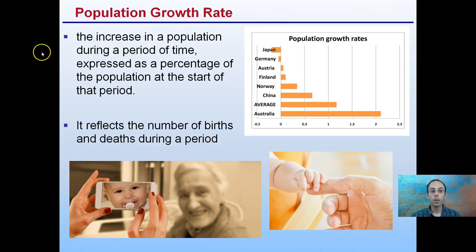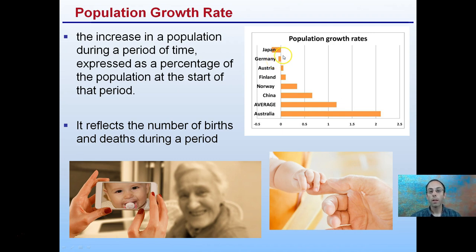Population growth rate is the increase in population during a period of time, expressed as a percentage of the population at the start of that period. It reflects the number of births and deaths during a period of time. Notice here that Germany and Japan are below zero — they actually have negative population growth rates, meaning their population is decreasing every year. It's possible for population growth to be negative. We want to look at the average, and consider how things well above or below that average may influence the world's population and the resources we use on a global scale.